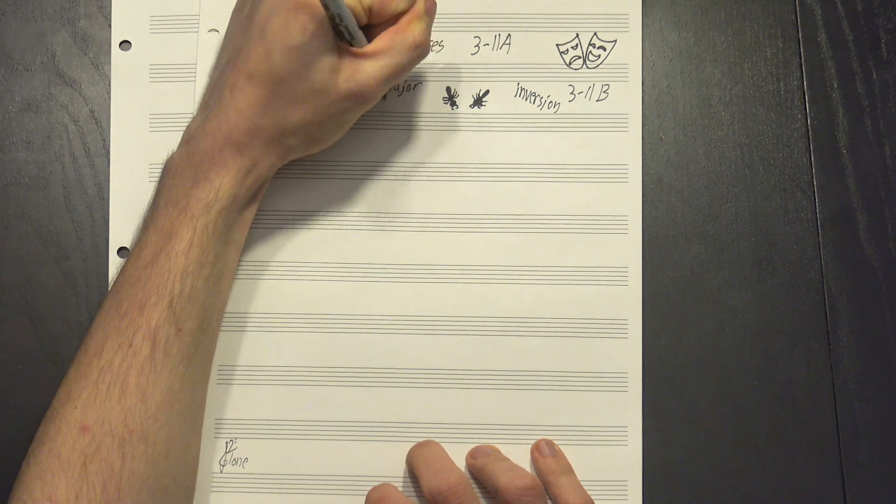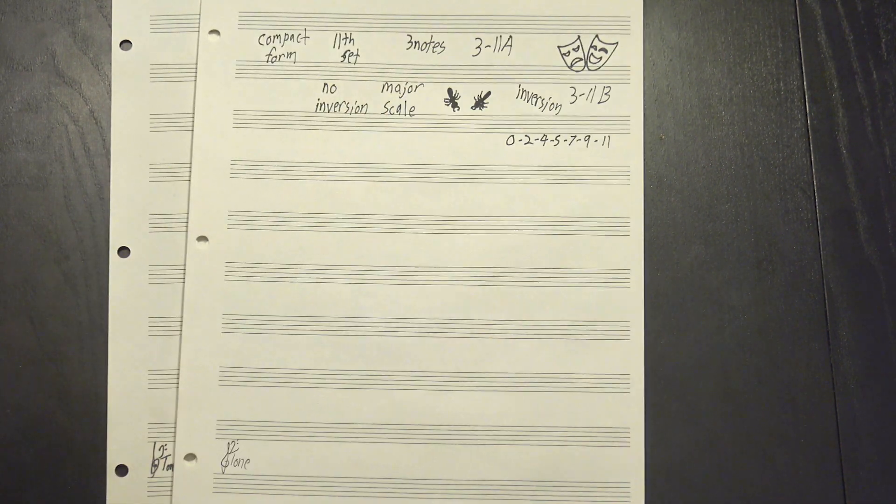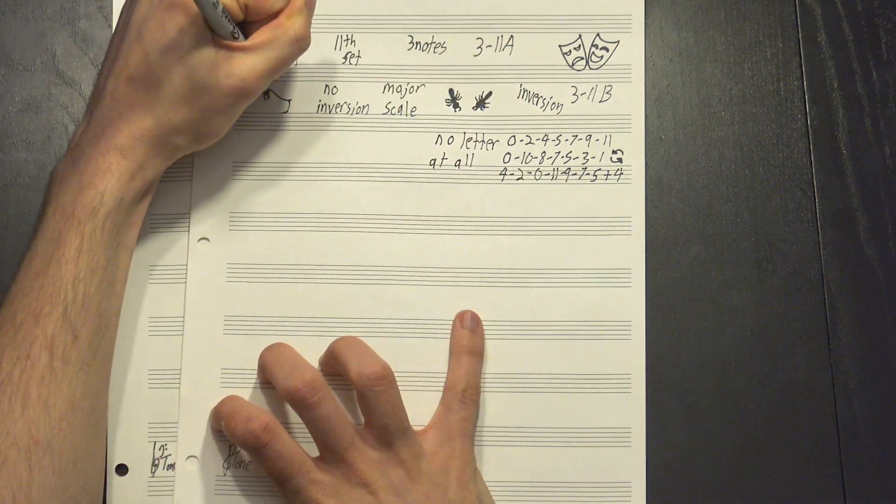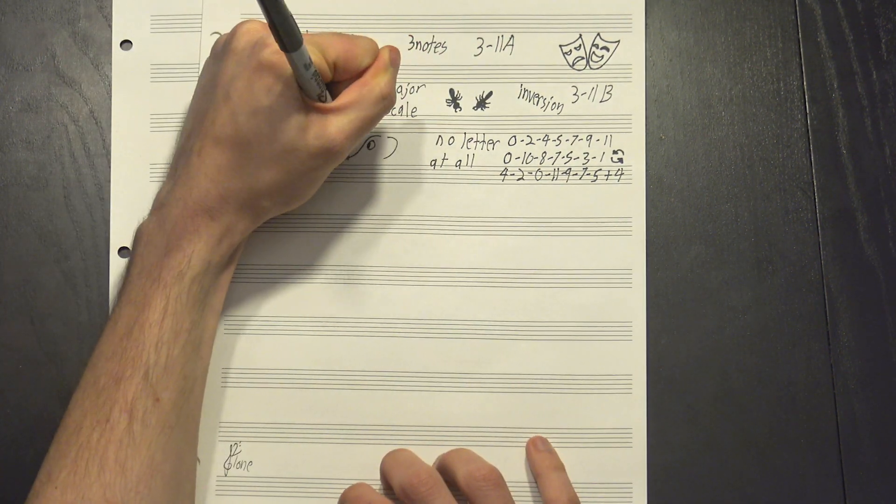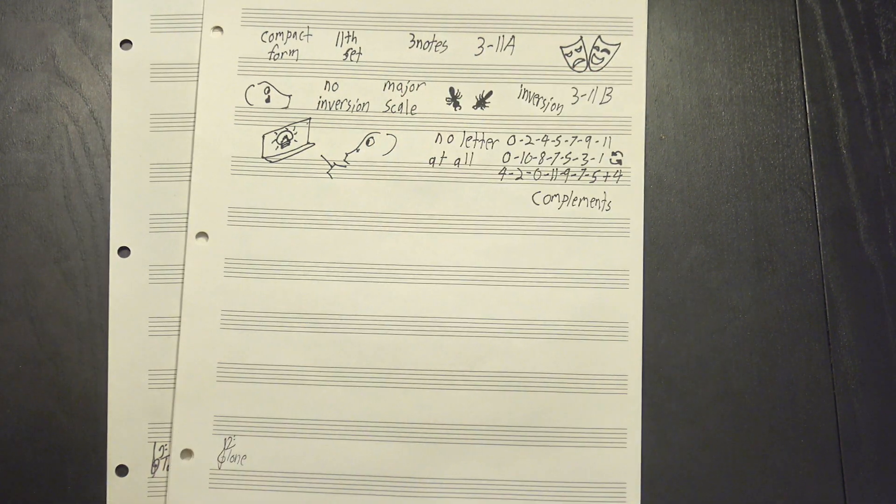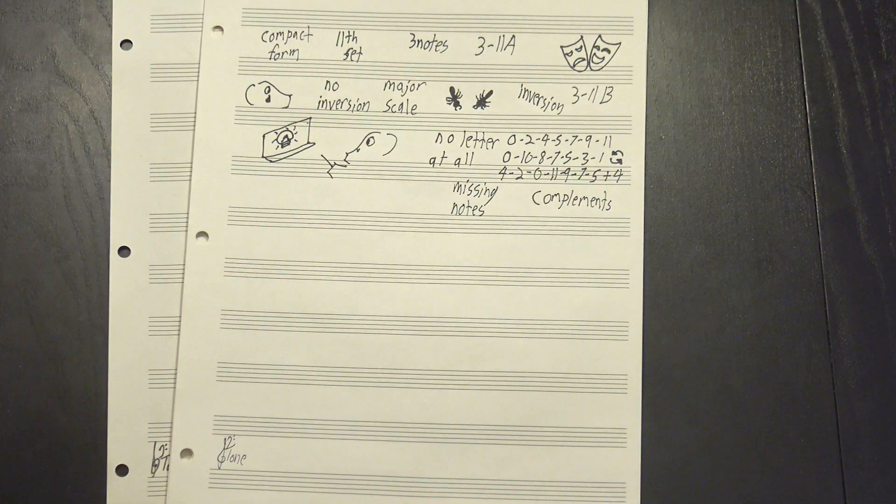There's also some sets, including the major scale, that have no inversion. If you flip them upside down, you just get the same thing back. These don't get a letter at all, which is kinda sad, if you ask me. And that's just one of the interesting things you find when you start looking at sets. Another thing to keep an eye out for is complements, that is, what notes are missing from a set.